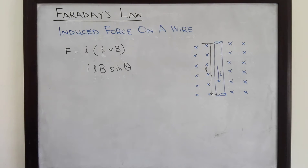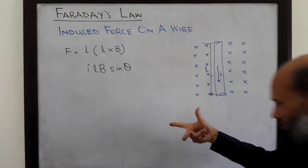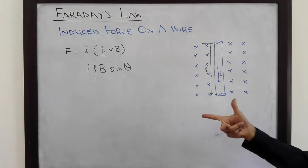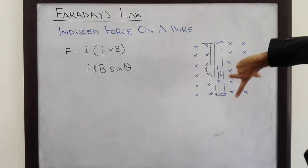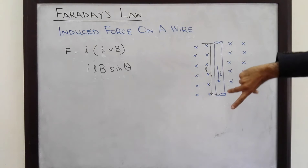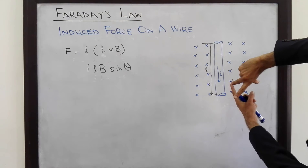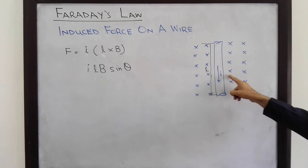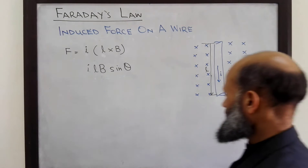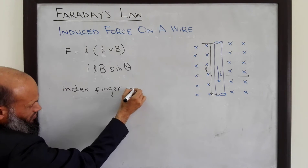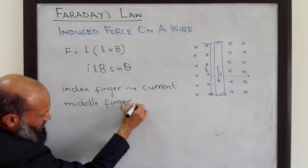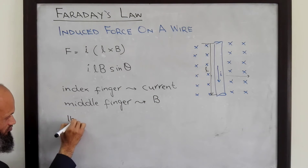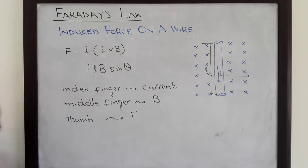The direction of the induced force can be determined in several ways. The easiest approach is to apply the right-hand rule: orient the fingers of your right hand so that the three fingers are perpendicular to each other. If the index finger is oriented in the direction of current and the middle finger in the direction of flux, then the thumb will indicate the direction of the induced force. In this particular case, the force will be exerted towards the right.